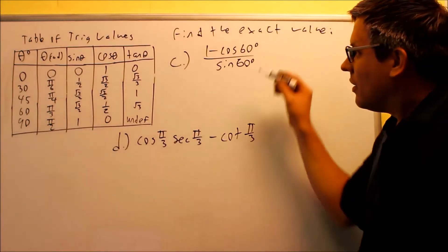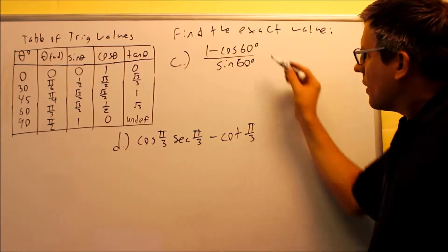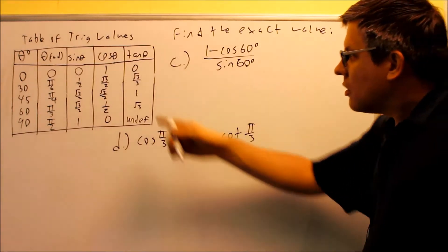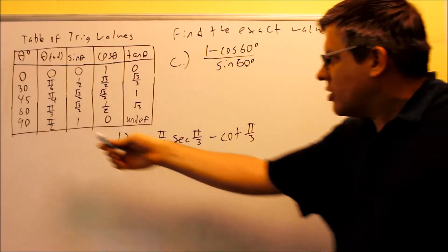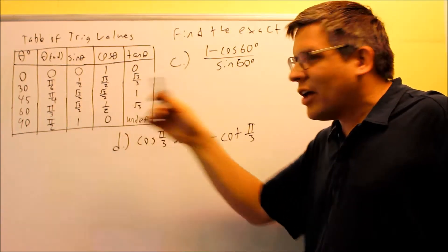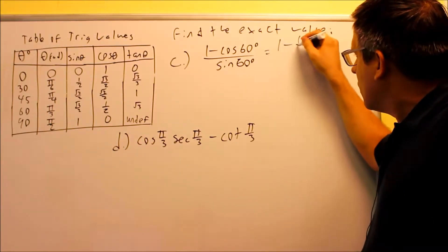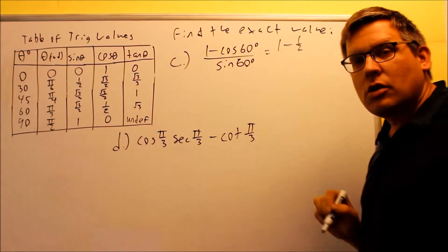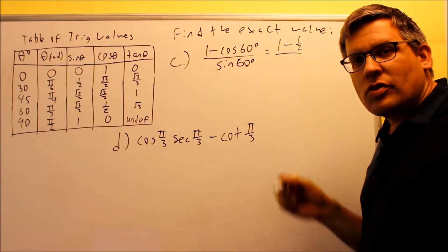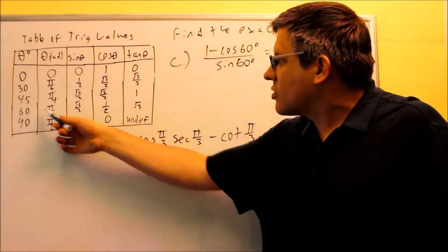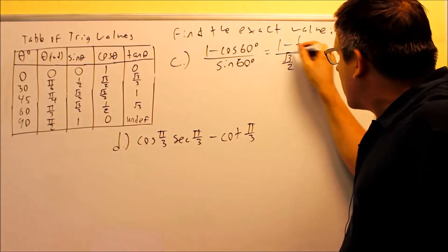For C and D, we want to do (1 minus cosine 60) over sine of 60. To do this, we grab these values off of the table. Cosine 60 — here's 60 degrees, going over to cosine — that value is 1/2. So on the top I'm going to write 1 minus 1/2. On the bottom, the value for sine 60 — here's 60 degrees — sine is going to be square root of 3 over 2.